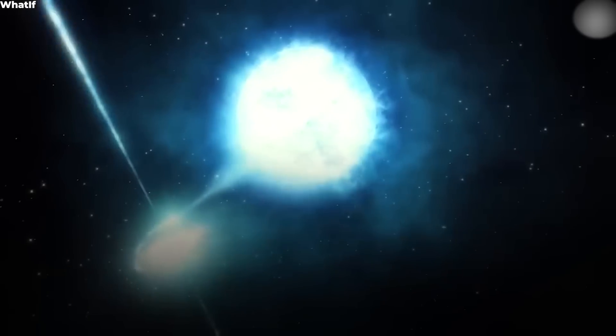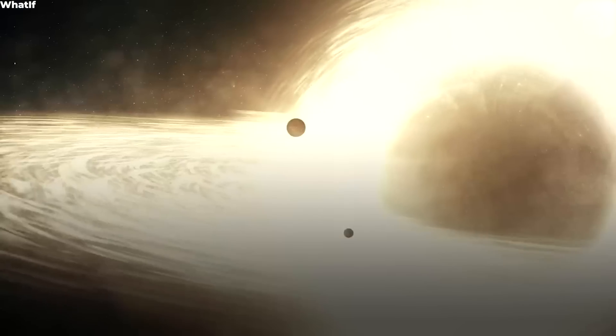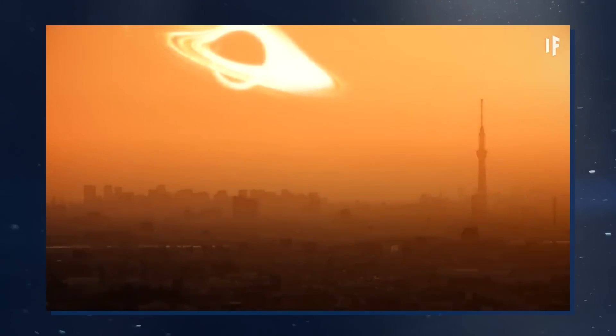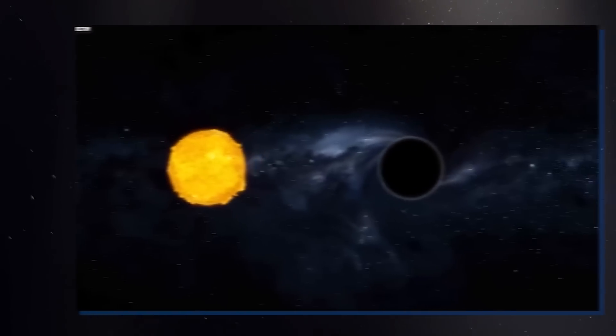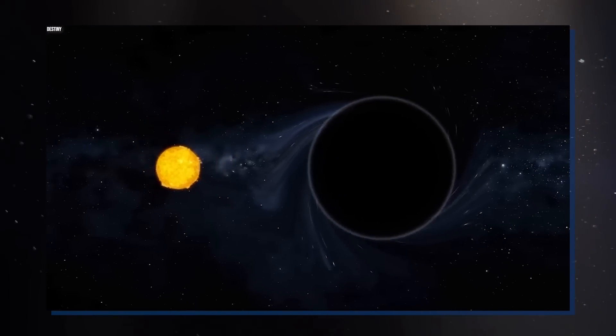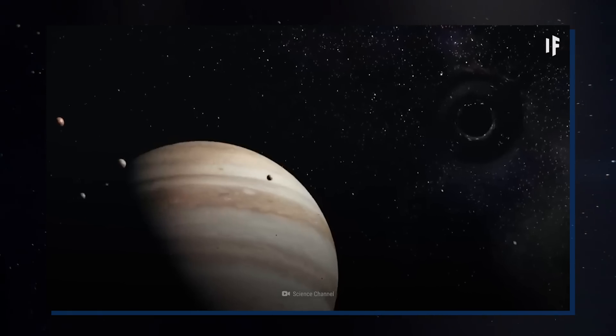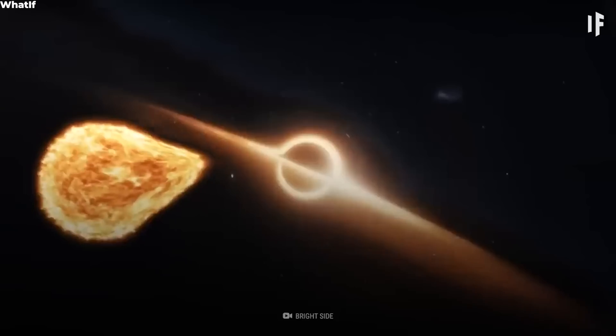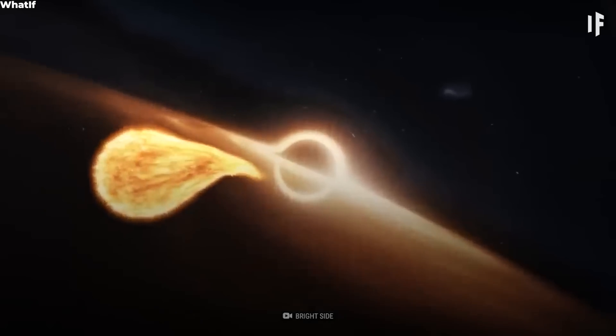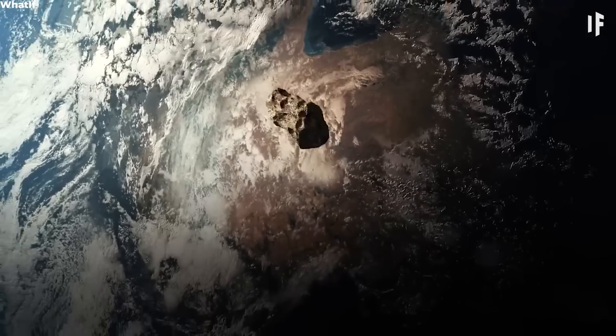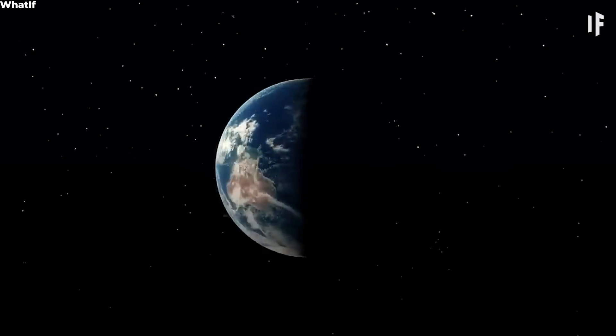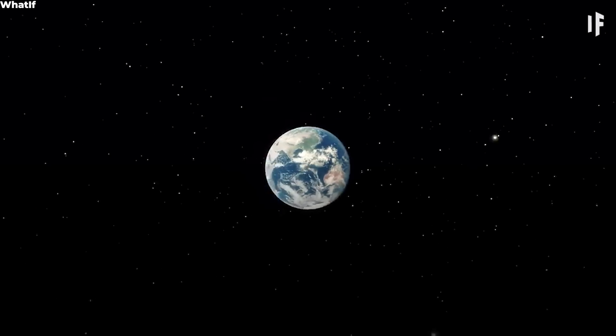According to NASA, this is an improbable scenario that will never occur. Black holes do not wander around the universe randomly swallowing worlds. Like all other objects in space, they obey the laws of gravity. A black hole's orbit would have to be very close to the solar system to affect Earth, which is unlikely. Even if the Sun spontaneously turned into a black hole one day, the effects of its gravity would remain the same. In other words, the Earth and the planets would remain in their previous orbits.